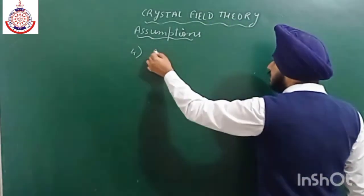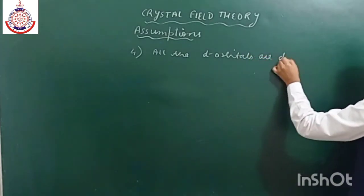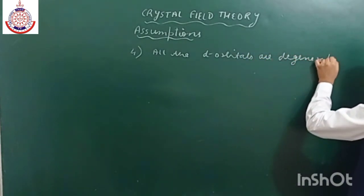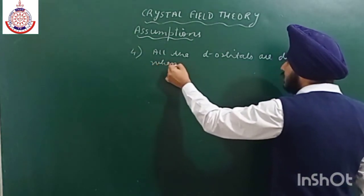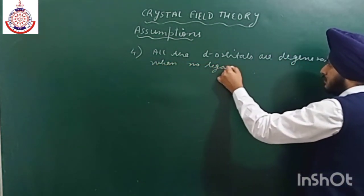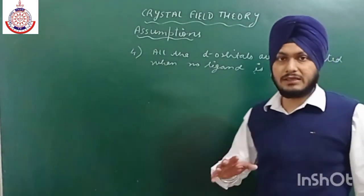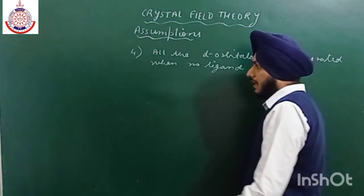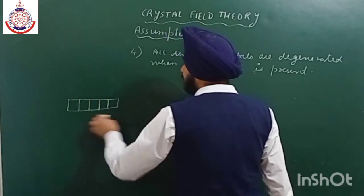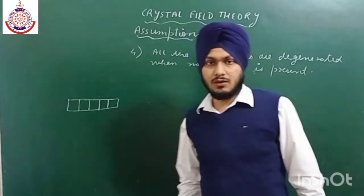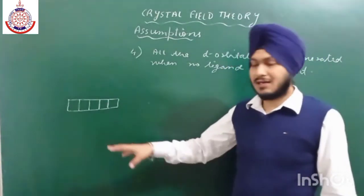The next assumption: as we all know, there are five d orbitals. All the d orbitals are degenerate when no ligand is present. When no ligand is present, all d orbitals are degenerate — meaning they all have the same energy. All five orbitals have the same energy. There is a difference between the shape of d orbitals, but in the beginning they are all degenerate.